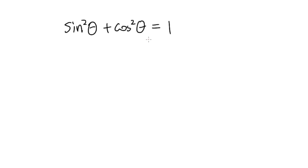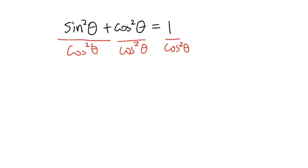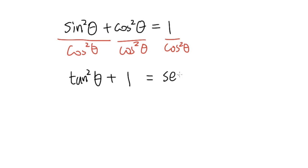Now I want to show another version of this identity that involves tangent and secant. Starting from sine squared theta plus cosine squared theta equals 1, I'm going to divide every term by cosine squared theta. Sine squared over cosine squared is tangent squared theta. Cosine squared over cosine squared is 1. And 1 divided by cosine squared is secant squared theta. So we get tangent squared theta plus 1 equals secant squared theta.